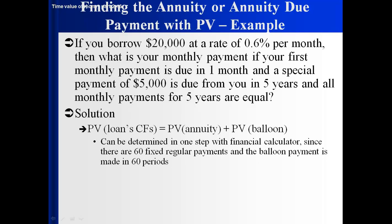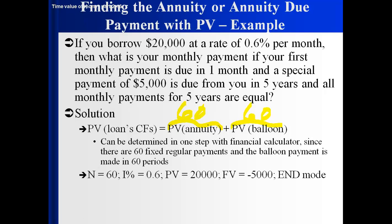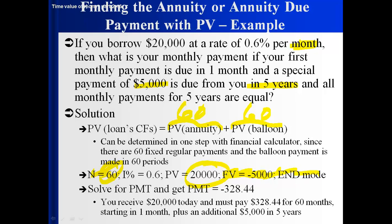We can also do this in one step. The annuity has 60 monthly payments and the balloon payment is also in 60 months, so N equals 60 and we're in annuity mode, solving for payment. We're paying 60 monthly payments starting in one period, plus $5,000 in 60 months. The present value of all these cash flows is negative $20,000, so we set PV as the opposite of that and solve. We get the same answer as the two-step method: a monthly payment of $328.44.